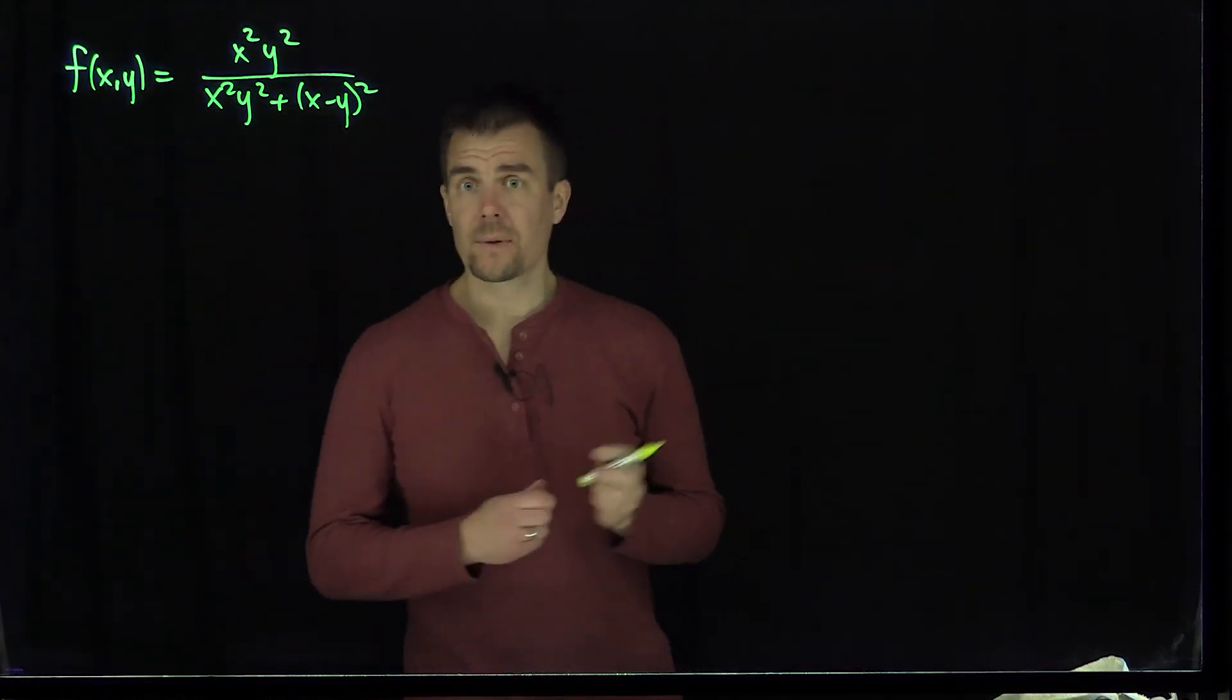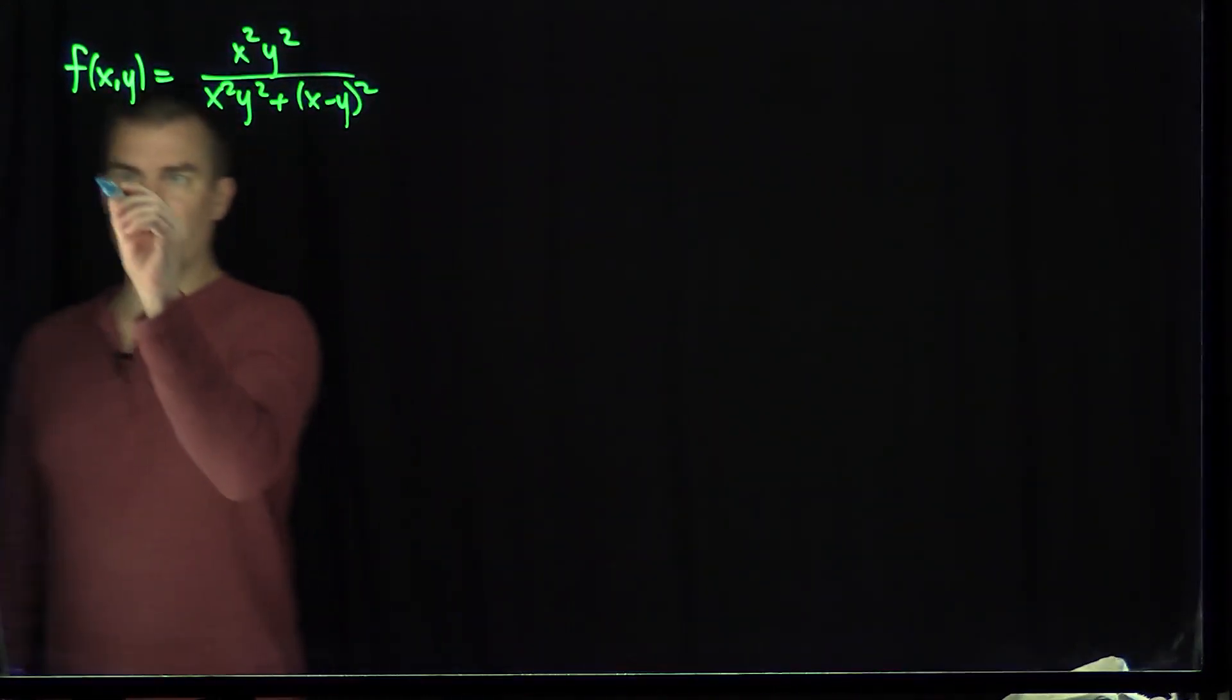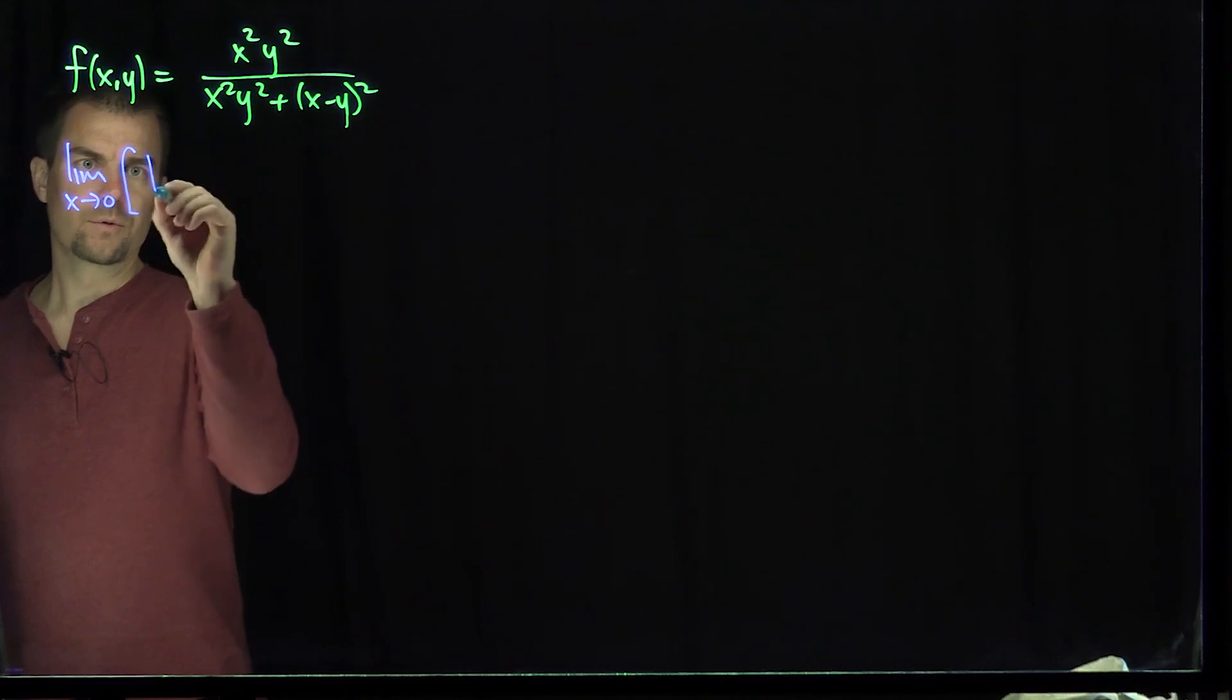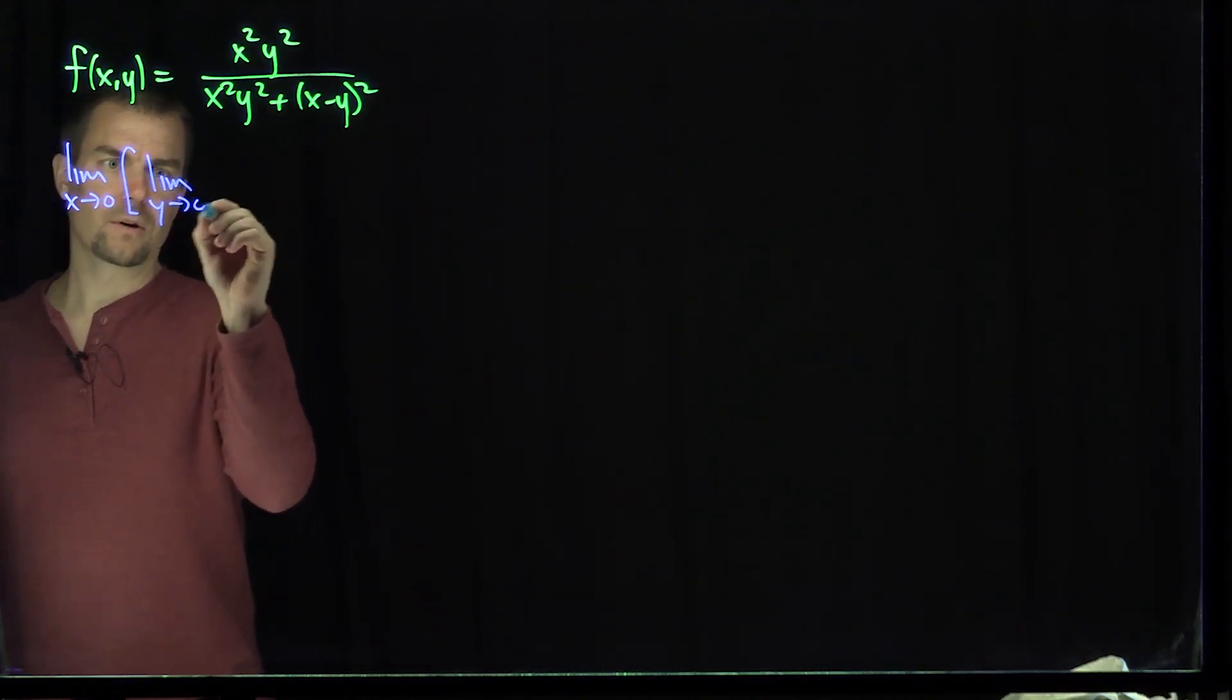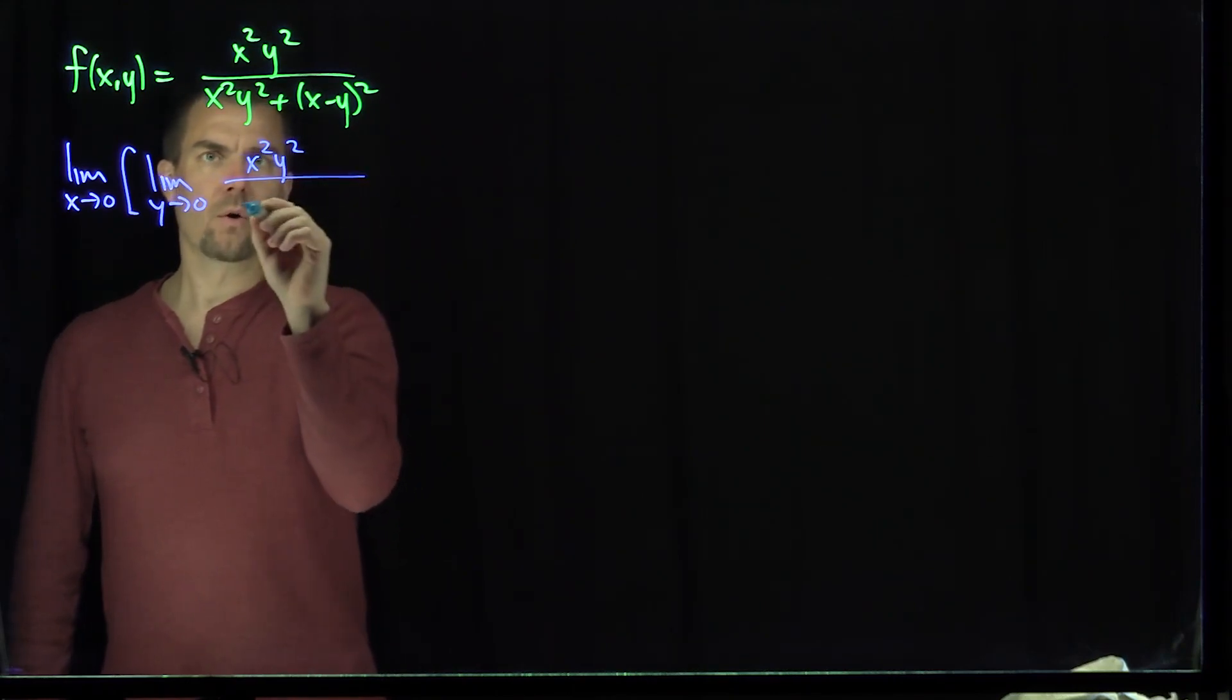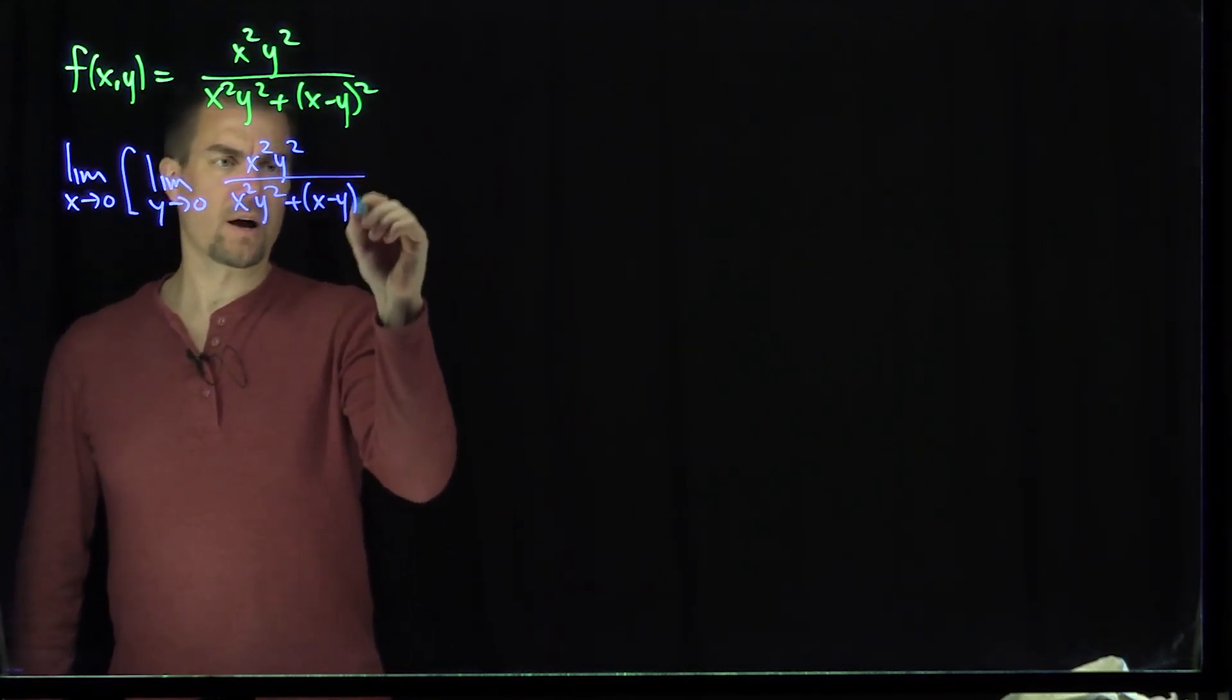We'll do three distinct limits to see that the limit doesn't exist. The first one we'll do is the limit as x goes to zero last. Then we'll do the limit as y goes to zero first of this function, x squared y squared over x squared y squared plus x minus y squared.